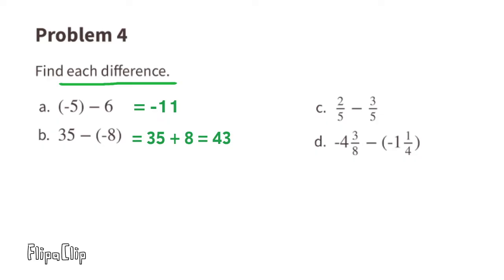Since the opposite of negative 8 is positive 8, we can rewrite this as 35 plus 8, which equals 43. Part c: 2 fifths minus 3 fifths equals negative 1 fifth, because 2 minus 3 is negative 1.